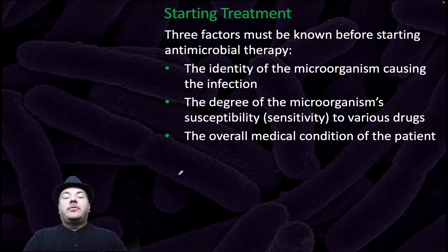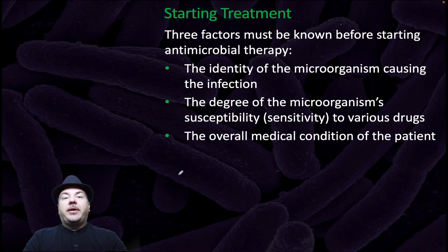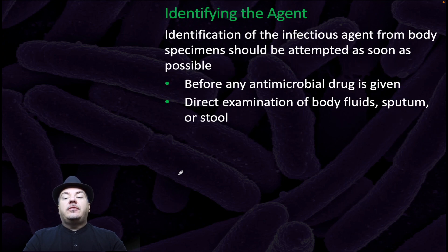Three factors must be known before starting antimicrobial therapy: the identity of the microorganism causing the infection, the degree of the microorganism's susceptibility or sensitivity to various drugs, and the overall medical condition of the patient. Identification of the infectious agent from body specimens should be attempted as soon as possible before any antimicrobial drug is given. This can happen by direct examination of body fluids, sputum, or stool.